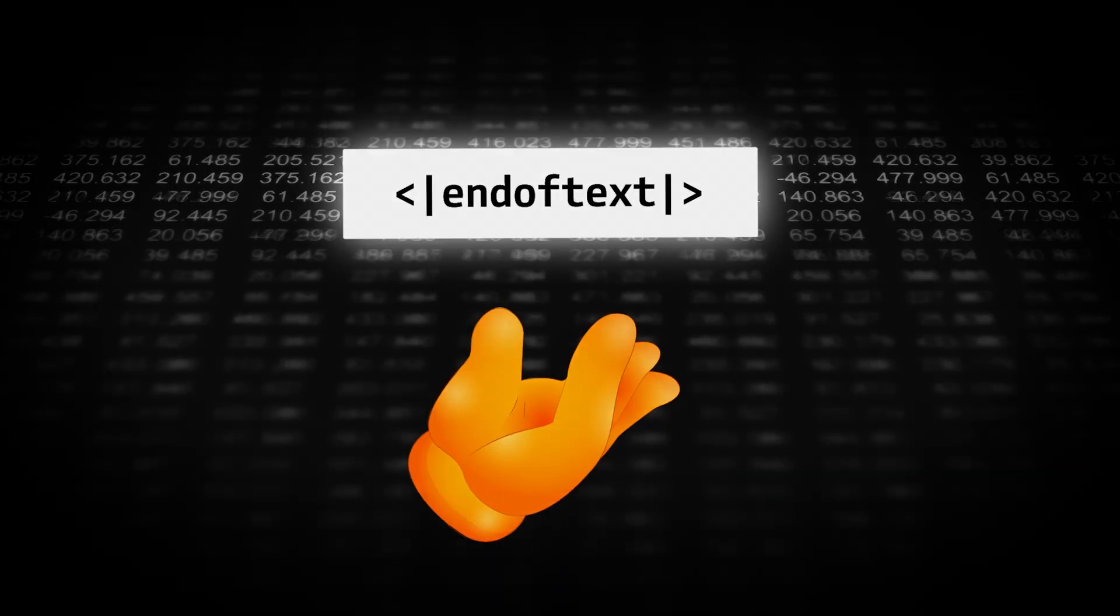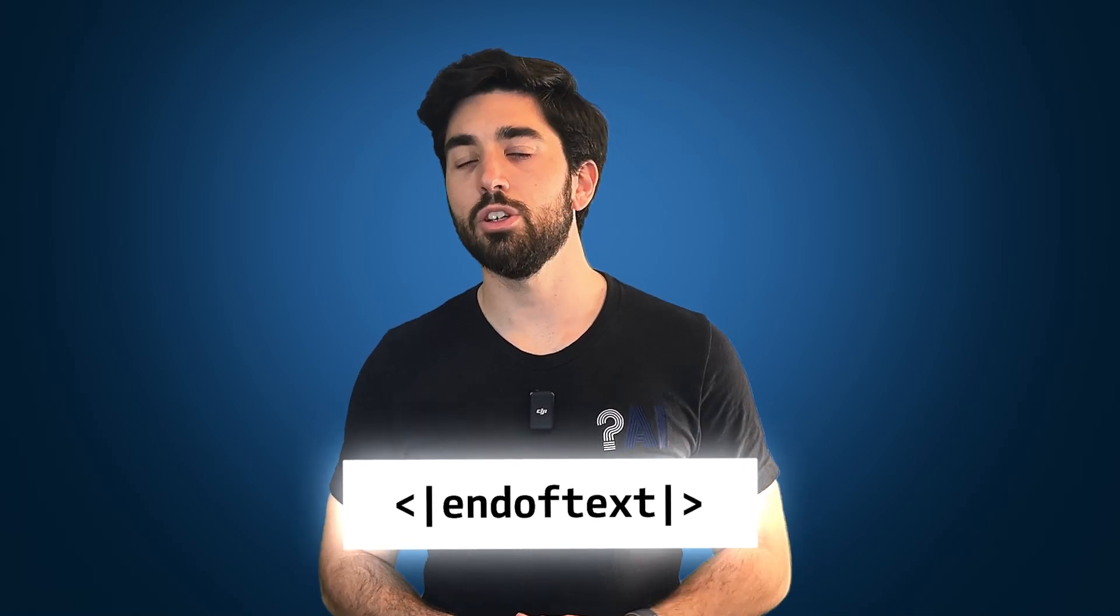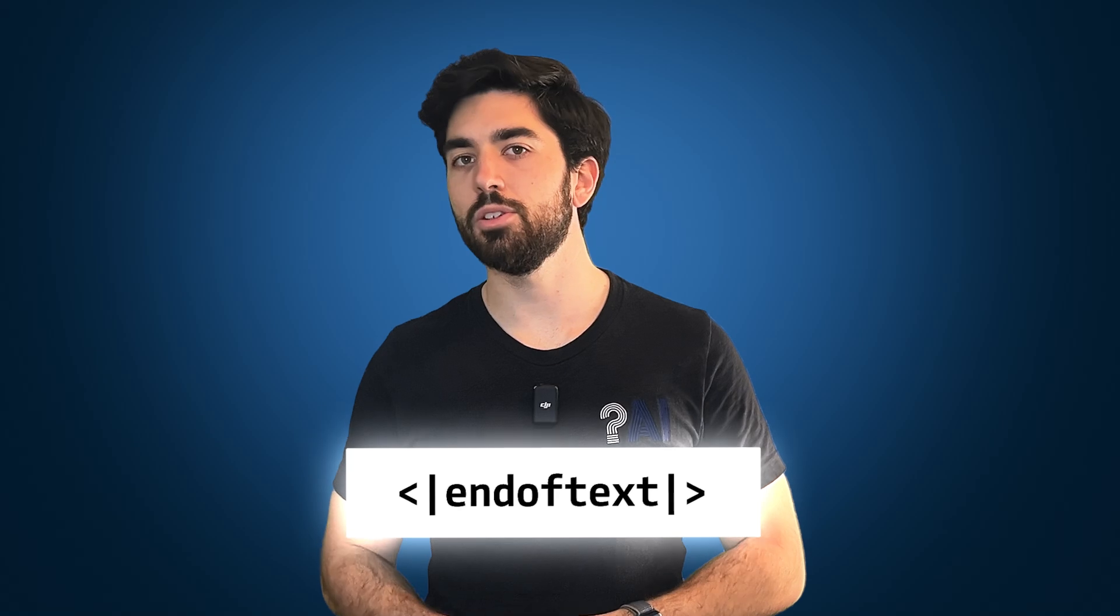As we've said, there are two potential scenarios for making a model stop generating. The first scenario is the usual one, when it has answered your question. This is thanks to a special token called EOS, or the end of text token.